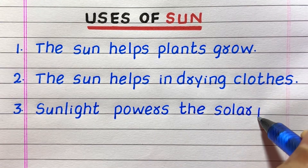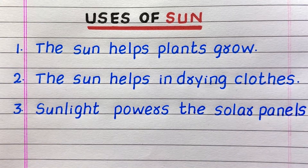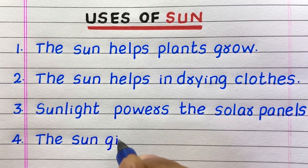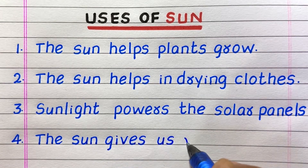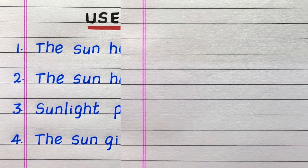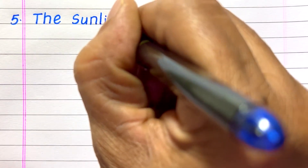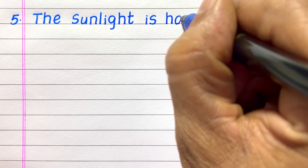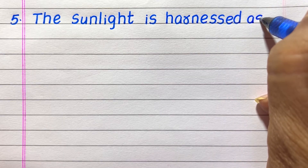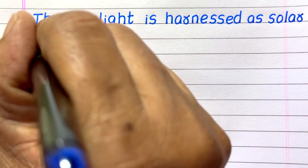Third, sunlight powers the solar panels. Fourth, the Sun gives us vitamin D. Fifth use of Sun is the sunlight is harnessed as solar energy.